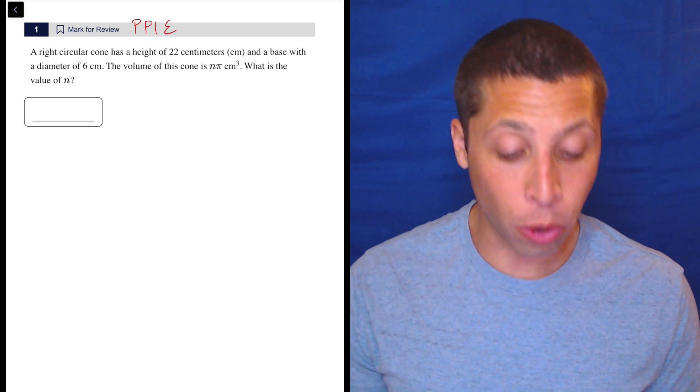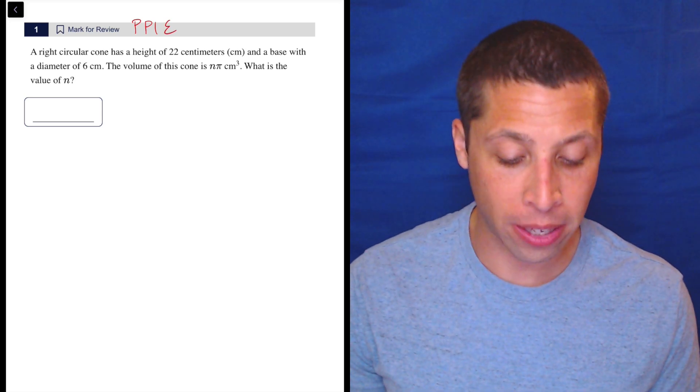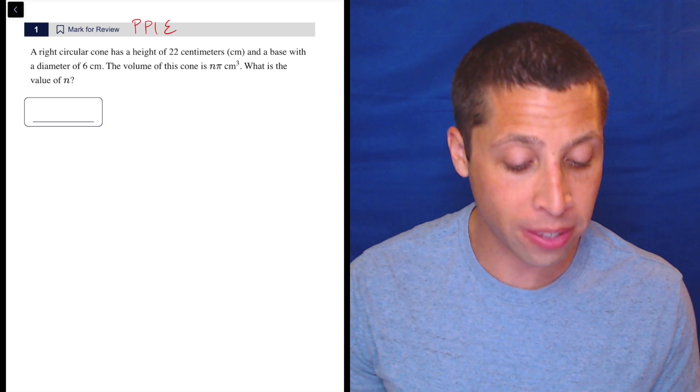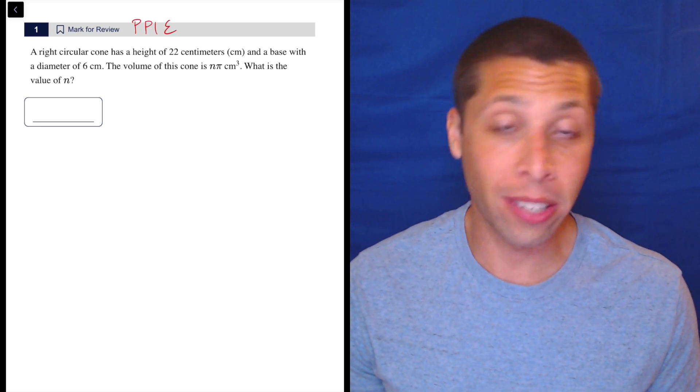A right circular cone has a height of 22 centimeters and a base with a diameter of 6 centimeters. The volume of this cone is n pi centimeters cubed. What is the value of n?